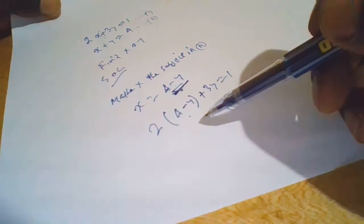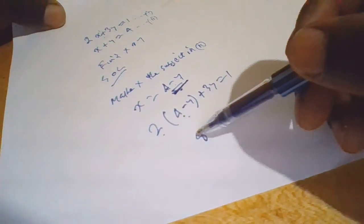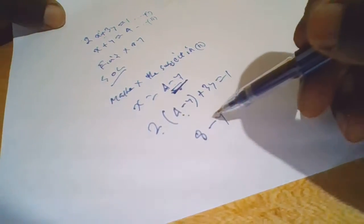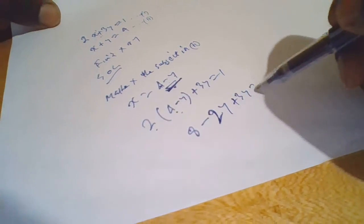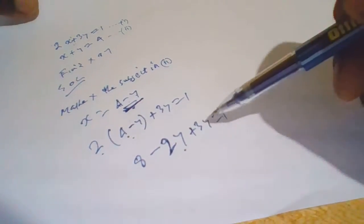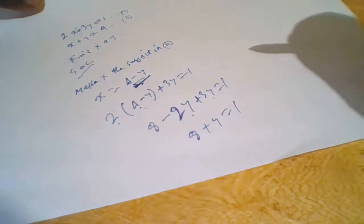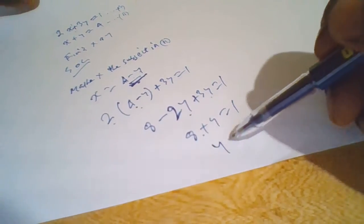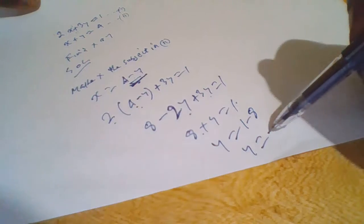So we can now open up the bracket by multiplying. 2 times 4 is 8, minus 2 times y, this would be 2y, then plus 3y equals 1. Now you have minus 2y plus 3y, we remain with y. So we have 8 plus y equals 1. So 8 crosses to the other side, becomes negative. So we have y equals 1 minus 8, so y equals minus 7.